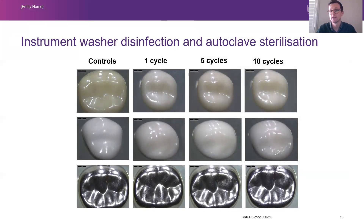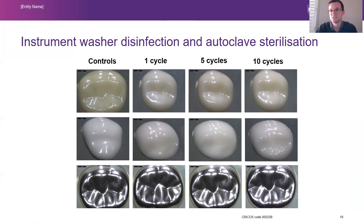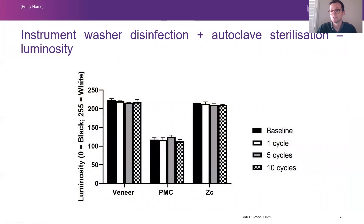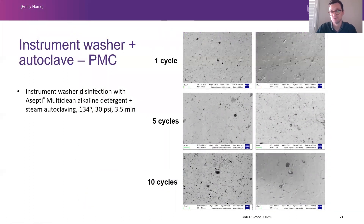For the instrument washer group at one, five, and ten cycles, we did notice for the veneered crown material that we were getting a chipping or fragmentation of that veneer layer. The underlying stainless steel layer is starting to peek through in a few regions, and that was noted mostly towards the end at eight, nine, and ten cycles. For the zirconia and the preformed metal crown, no differences were noted. Luminosity levels showed no statistical differences from one through to ten cycles for the instrument washer disinfection and autoclave sterilisation, and for the preformed metal crown SEM images, no differences were noted.